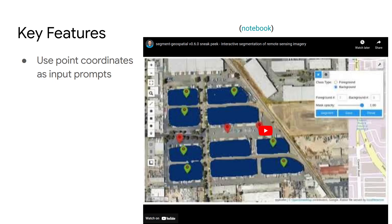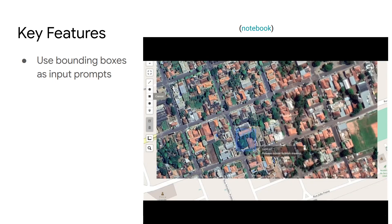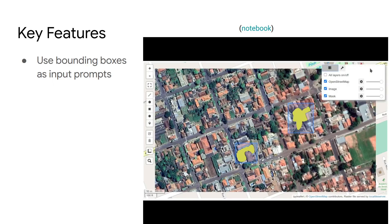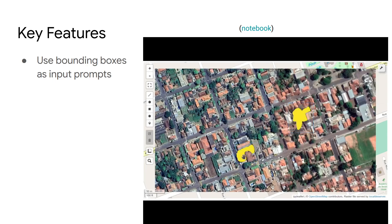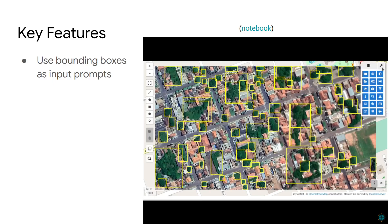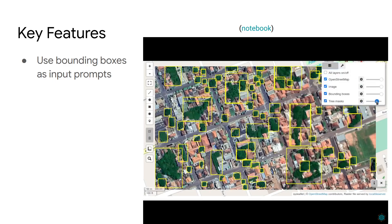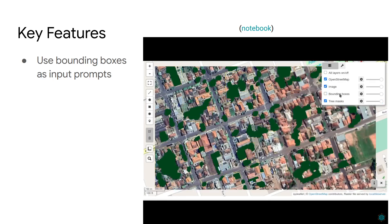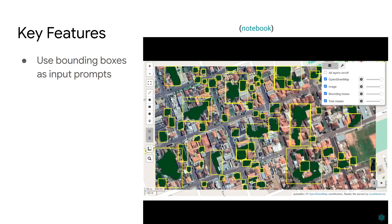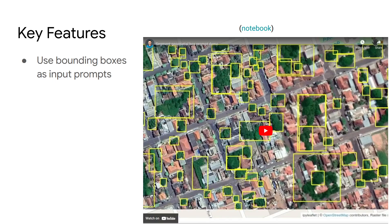You can use this to extract all kinds of features, for example buildings. You can also draw a bounding box — so besides using a point, you can draw a bounding box and the Segment Anything Model will extract objects within the bounding box. It's going to be much faster than manually delineating the features yourself. You can also use bounding boxes exported from other deep learning models — those models generate bounding boxes as a first step, and you can use that as input into Segment Geospatial to automatically detect all objects within the bounding boxes. This is so much faster.